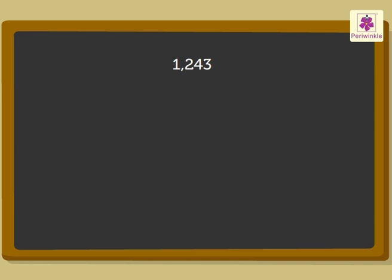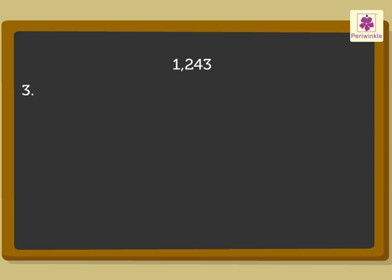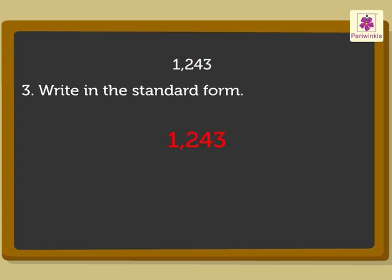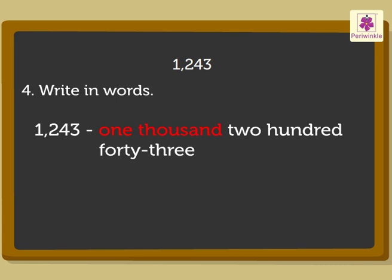Second, it can also be written using the place value chart as shown. Third, next is writing the number in the standard form. Fourth, we can also write it in words as one thousand, two hundred, forty-three.